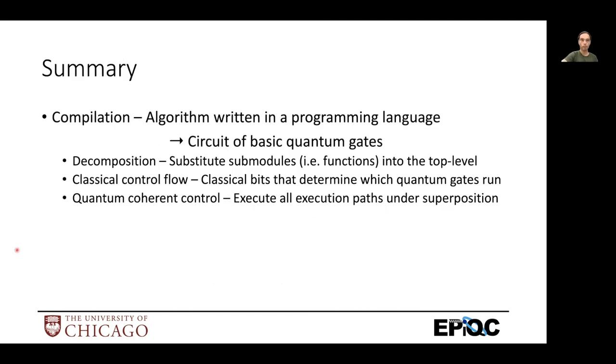So in summary, we talked about compilers, compared classical compilers, logic synthesis, and how they relate to quantum compiling. But it boils down to you have an algorithm written in a programming language, and you break it down and simplify it into these basic quantum gates that you can run directly on hardware. And we talked about decomposition, a major step of this, where we break down each of the sub modules, i.e. functions, from the top level of your algorithm down to the lowest, simplest functions.